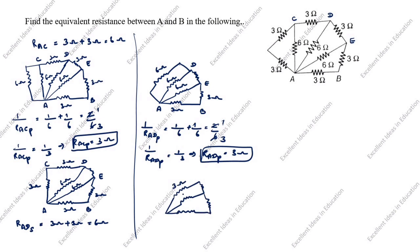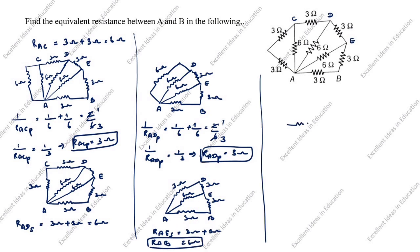The new drawing shows nodes A, B, E, D with 3 ohm, 3 ohm, 6 ohm, 3 ohm, and 3 ohm. These resistors are in series, so R_AG_series = 3 ohm + 3 ohm = 6 ohm. Redrawn circuit now shows nodes A, B, E with 6 ohm, 6 ohm, 6 ohm, 3 ohm, 3 ohm.